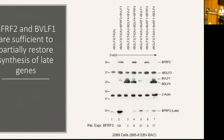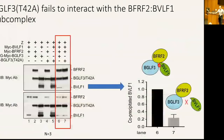This suggested that phosphorylation at T42 mediates interaction with BFRF2 and BVLF1. We returned to co-immunoprecipitation, this time expressing all three proteins together. In the wild-type, pulling down BGLF3 co-precipitates both BFRF2 and BVLF1. The mutant T42A interacts fine with BFRF2, but is defective in pulling down BVLF1. We conclude that phosphorylation at T42 is specifically important for recruitment of BVLF1 — when the site is mutated, BVLF1 cannot be recruited to the complex.